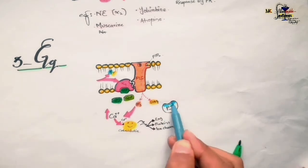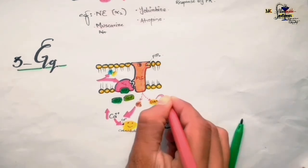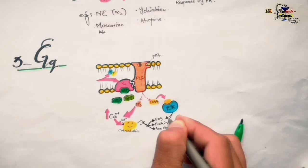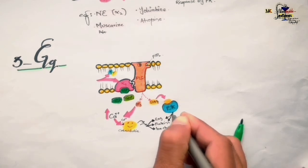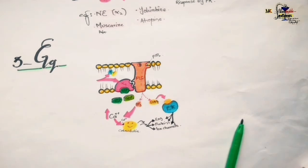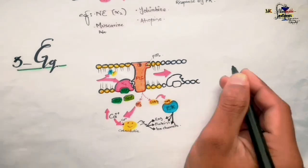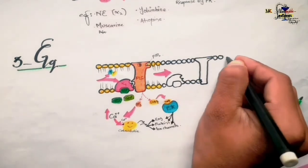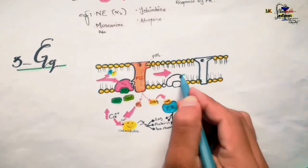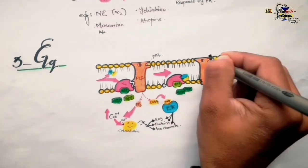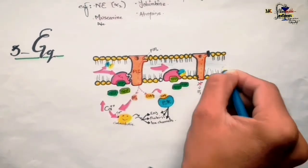DAG (diacylglycerol) interacts with protein kinase C, which also results in alterations in enzyme activity, protein production, and ion channel conductance. The alpha subunit then replaces GTP with GDP and dissociates from phospholipase C, recombines with the beta-gamma subunits awaiting the next receptor activation, and phospholipase C becomes deactivated.